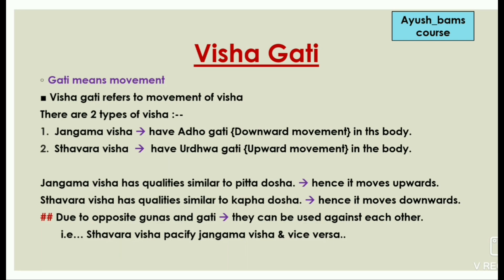Vishagati: Gati means movement. Vishagati refers to the movement of Visha. There are two types of Visha. First, Jangama Visha has Adhogati — downward movement in the body. Sthavara Visha has Urdhva Gati — upward movement in the body. Jangama Visha has qualities similar to Pitta Dosha, hence it moves upwards, whereas Sthavara Visha has qualities similar to Kapha Dosha and due to this it moves downwards. Due to opposite gunas and gatis, they can be used against each other — Sthavara Visha pacifies Jangama Visha and vice versa.